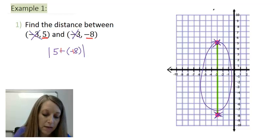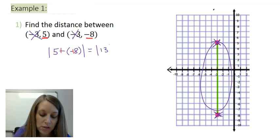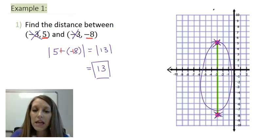My double negatives cancel out. That gives me the absolute value of 5 plus 8, which is 13. And so the distance between these two points, or ordered pairs, is 13. And of course, if I counted the tick marks in between, I would come up with the same thing.